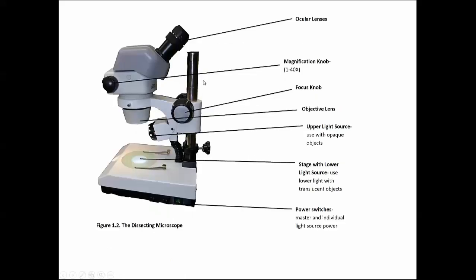We'll also be using dissecting scopes. We do have a few different models of those. This is one example, but there will also be ocular lenses. There is going to be a single external lens here with internal parts that can be changed by turning the magnification knob. Our scopes vary slightly, but usually they're roughly 1 to 40 times total magnification. That's including the setting here and the magnification by the ocular lens.